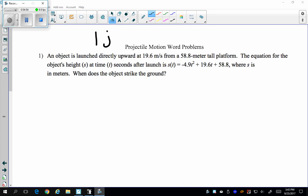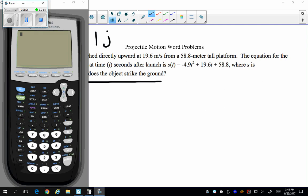Moving on to section 1j, we're going to be talking about projectile motion and how to use our calculator to find different values. So this problem talks about an object being launched directly upward and then it's obviously going to fall down. So we want to find out when does the object strike the ground. And I'm given this formula S of t equals negative 4.9t squared plus 19.6t plus 58.8. The first thing I want to do is go into my calculator and type it into my y equals. So y equals my equation.